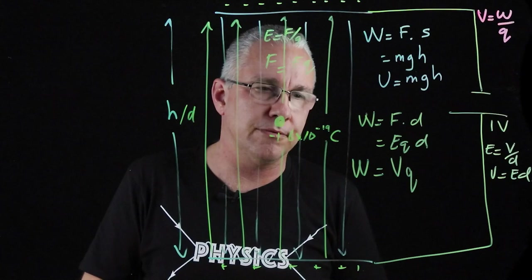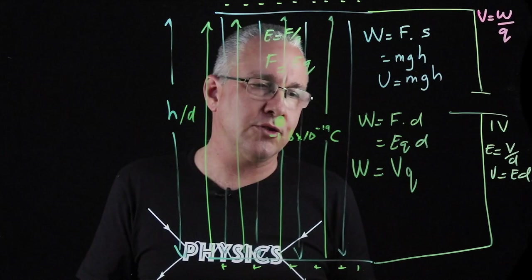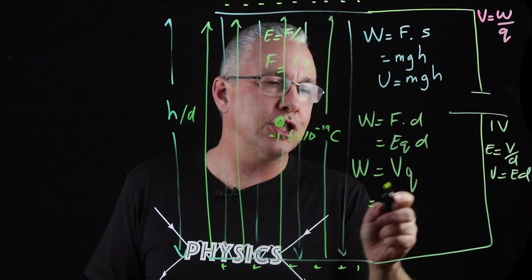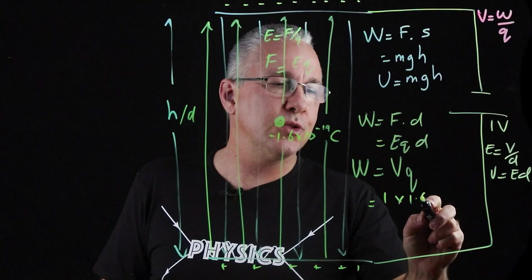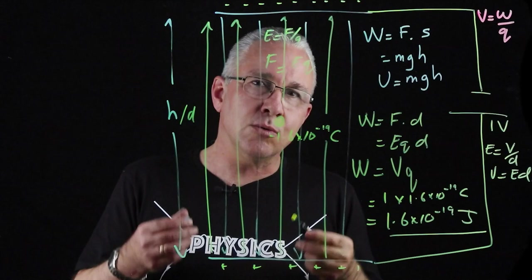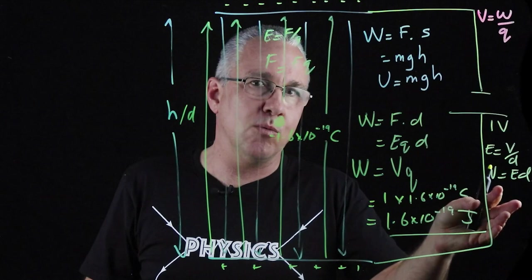So now what we can get is we can get the energy of my electron, my change in energy specifically, by simply multiplying the voltage multiplied by the charge. And so now if I want to work out the work done, it's simply the voltage multiplied by the charge, and we said it was equal to 1 volt, and we multiplied by the charge which was 1.6 by 10 to the power of negative 19 Coulomb, and we get a grand total of 1.6 by 10 to the negative 19 joules. So that's the work done on a single charge in an electric field which is set up by a one volt potential difference.